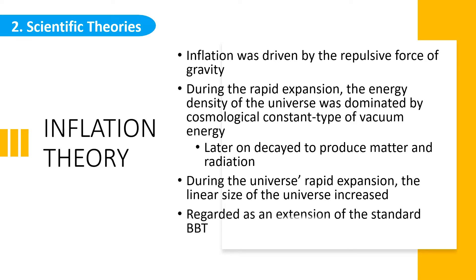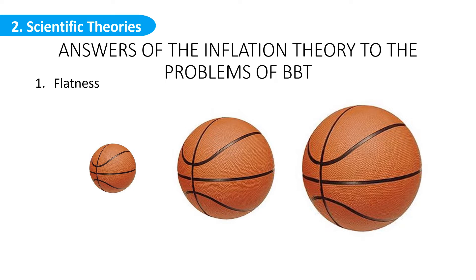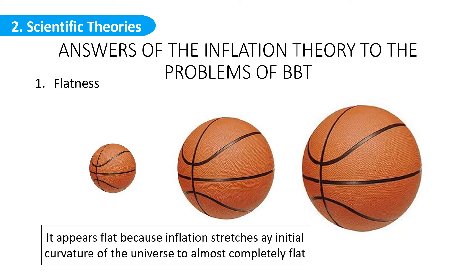Remember the problems of the Big Bang Theory that I mentioned in the last lesson: flatness, monopole, and horizon. As a solution to the unresolved problems of the Big Bang Theory, the inflation theory offered the following solutions. First, flatness: Imagine you are living on the surface of a basketball. The surface that you see is obviously curved. If the ball size is increased to the size of the earth, it would appear flat even though it is still a sphere. In astronomical proportion, it would appear flat because the inflation stretches any initial curvature of the universe to almost completely flat.